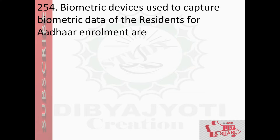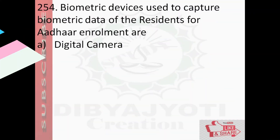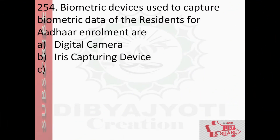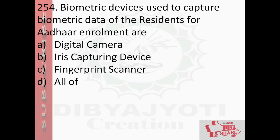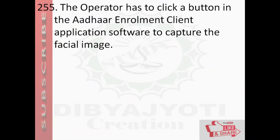Question number 154: Biometric devices used to capture biometric data of the residents for the Aadhaar environment are — option A: digital camera, option B: iris capturing device, option C: fingerprint scanner, option D: all of the above. And the answer is option D: all of the above.